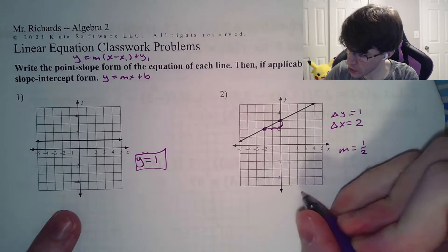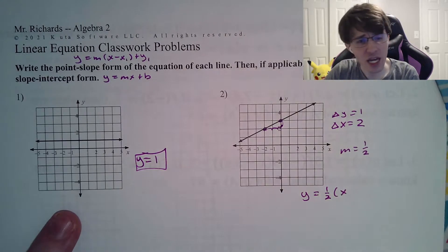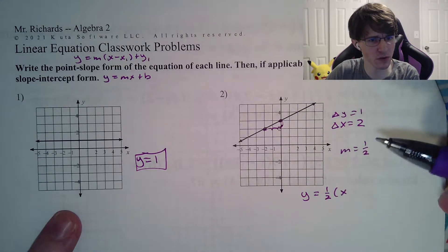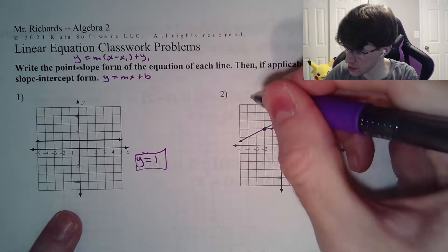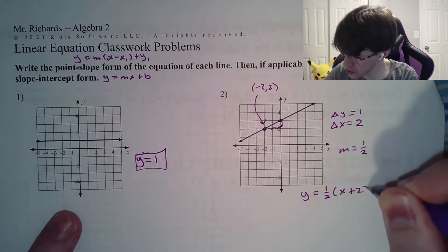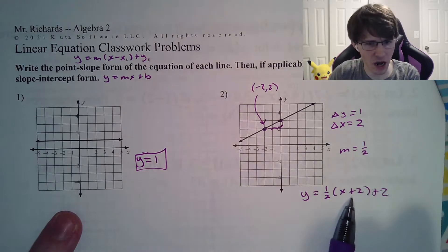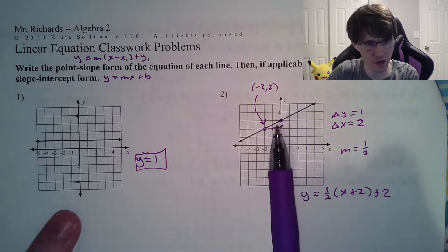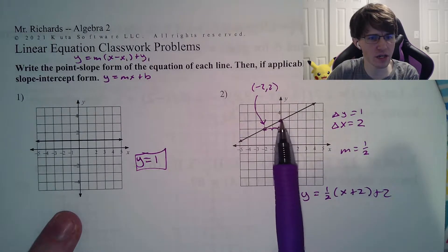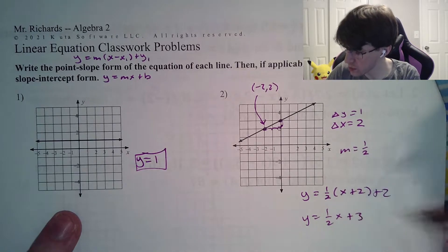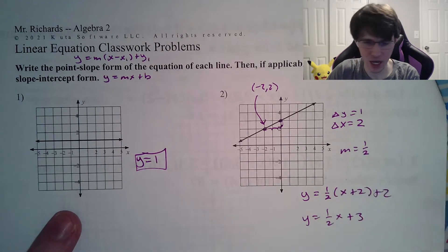For writing our point-slope form, we write y equals one half multiplied by x. Now we have to figure out what our x1 is — it's the coordinate which I started at. I started at negative 2, 2. So we get plus 2, plus 2. Be careful: it's always the opposite sign for that x value. There's our point-slope. For slope-intercept form, we get y equals one half x, and the intercept is plus 3. You could have also gotten that by distributing and adding like terms.